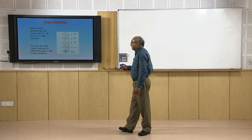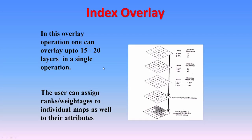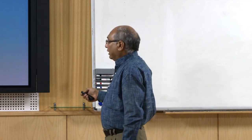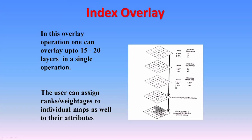Index overlay allows overlaying up to 15-20 layers in a single operation. The user can assign ranks or weightages to individual maps and to their attributes. For example, in groundwater exploration, lithology is very important so you assign it more weight, whereas soil is less important so it gets less weight. Similarly, slope maps, lineaments, or geological structures are assigned weights depending on their influence in the area. Different weights for different map types and categories within each map can be assigned, and a final map is created providing better understanding - for example, of groundwater conditions.